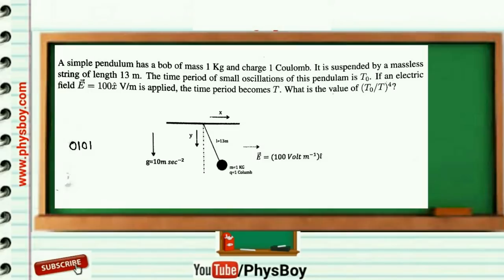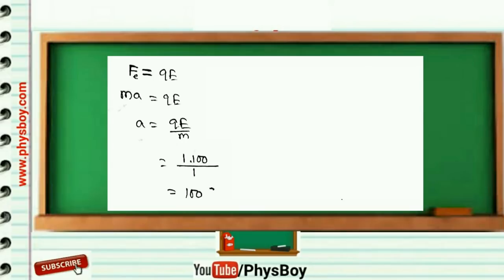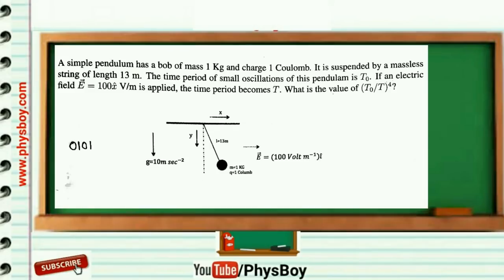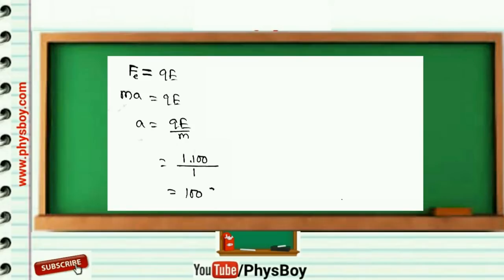A simple pendulum has a bob of mass 1 kg and charge 1 coulomb, suspended by a massless string of length 13 m. The time period of small oscillation is T₀. If an electric field E = 100x̂ V/m is applied, the time period becomes T. What is the value of (T₀/T)⁴? For this problem, T₀ = 2π√(l/g) and T = 2π√(l/a′), where a′ is the resultant acceleration of the bob.